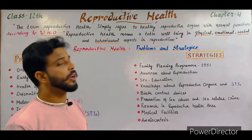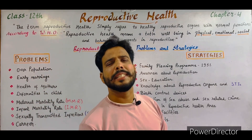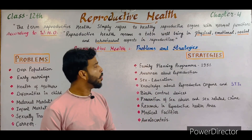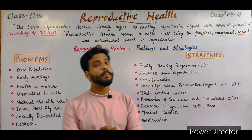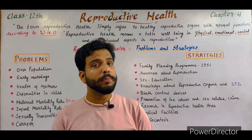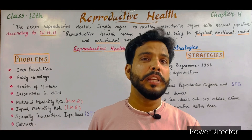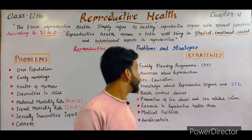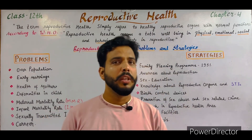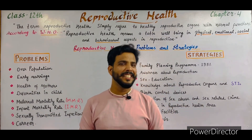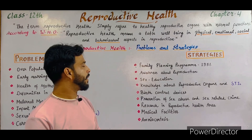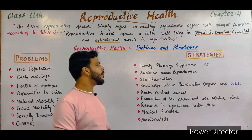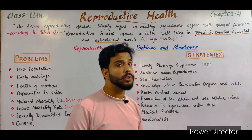Now we will discuss the strategies made by the government for reproductive health. The first strategy is the Family Planning Program, established by the Indian government in 1951. According to this program, we should plan our family and stop overpopulation. If we want to contribute to our country, we must use this program. We should not have more than two kids.